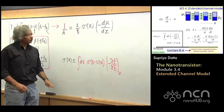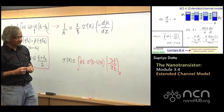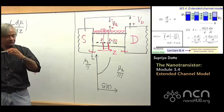And in a one-dimensional situation, this is the current at a particular location Z. But then in a one-dimensional device, you must have the same current everywhere.